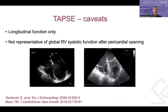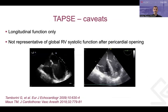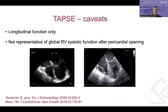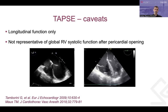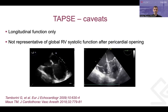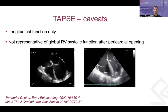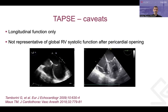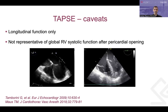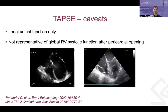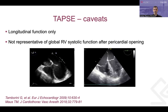TAPSE only looks at longitudinal RV function and isn't representative of global RV systolic function in patients who've had the pericardium opened — TAPSE drops after cardiac surgery as longitudinal function decreases and radial function compensates. Regional abnormalities can also cause errors: if the base moves well but the rest of the RV is akinetic, TAPSE overestimates function. Conversely, the classic McConnell sign — where the base doesn't move but the apex contracts — causes TAPSE to underestimate function.